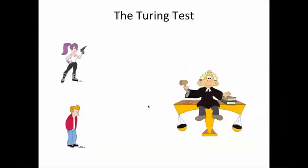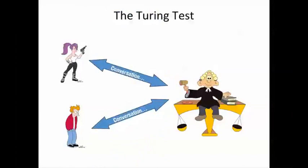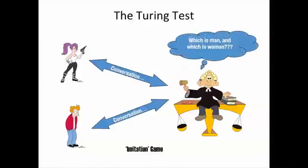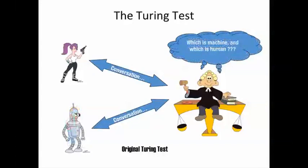Turing's original test is based on a popular party game where a human judge is able to converse using typewritten text only between two people, one a man and one a woman, and needs to judge based on the conversation alone which is a man and which is a woman. Turing's variation of this imitation game was to replace one of the participants by a machine, and now the judge needs to determine based on the conversations alone who is human and who is a machine.